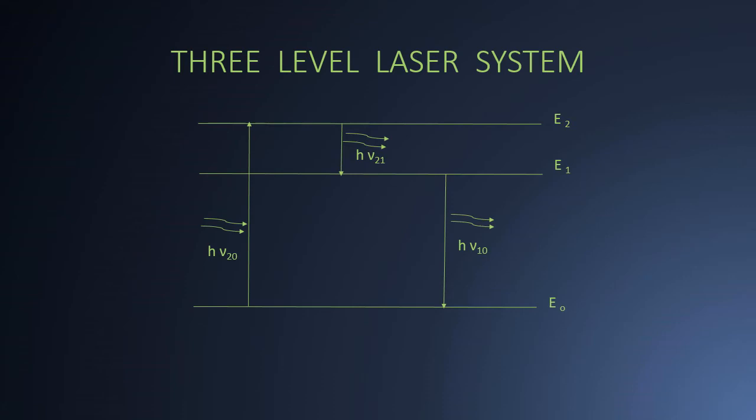All these emitted photons are in phase with each other and are made to come out of laser device as its output. The efficiency of 3 level laser system is given by the formula E1 minus E0 divided by E2 minus E0. So this is all about 3 level laser system.